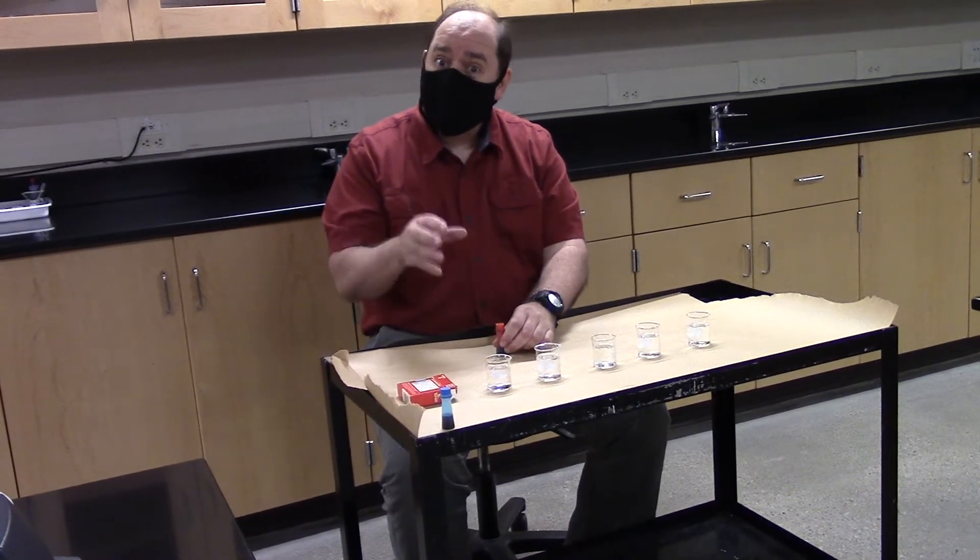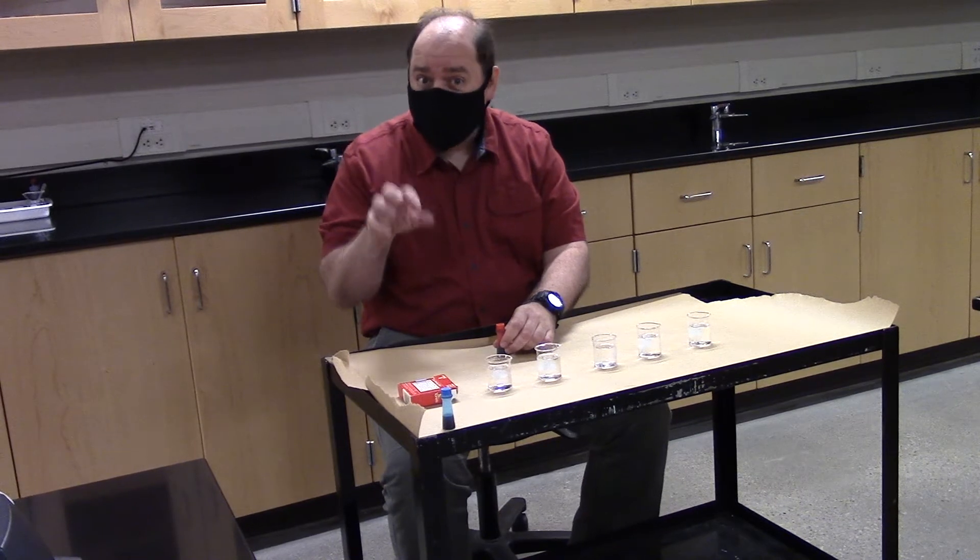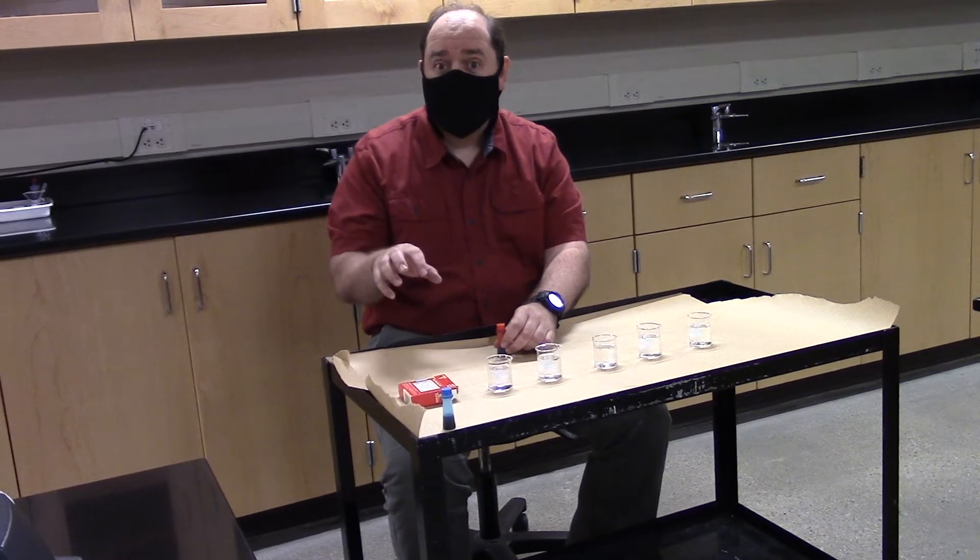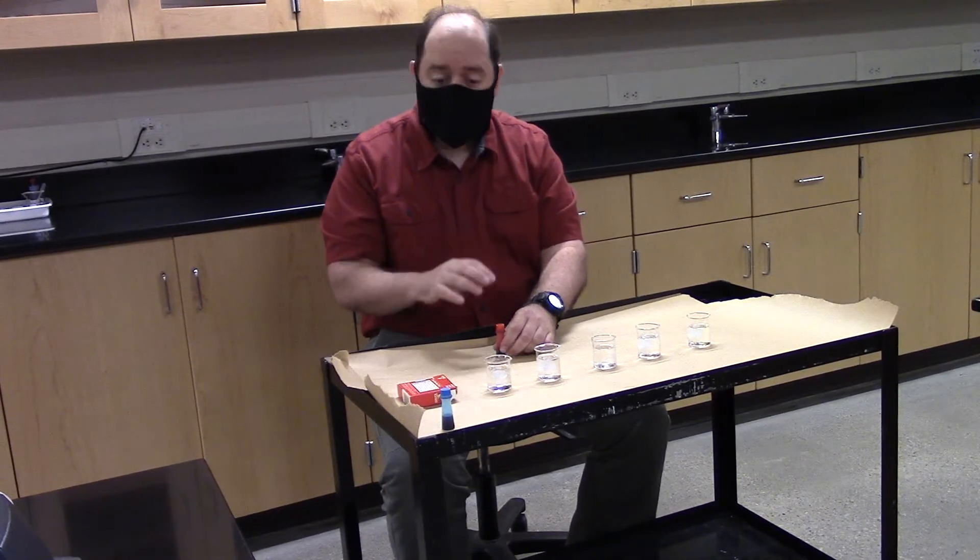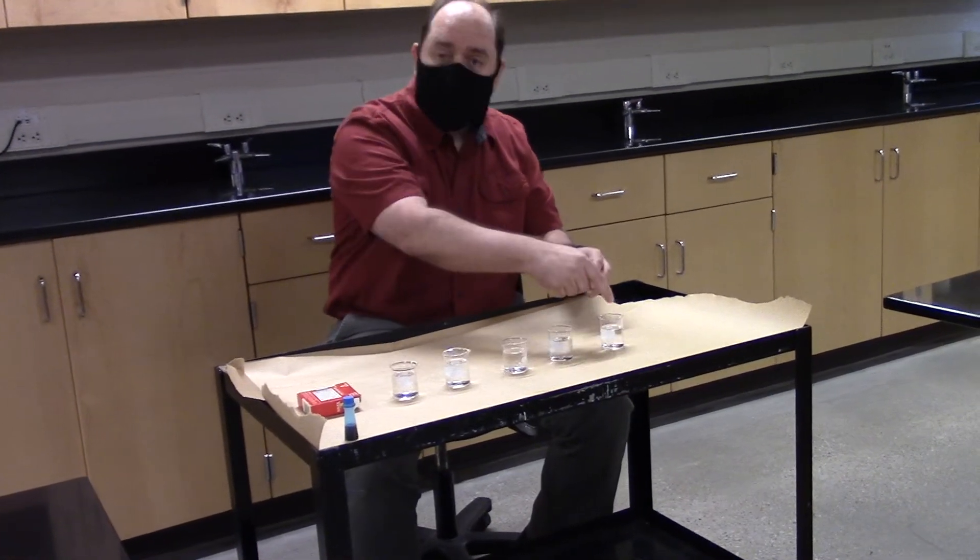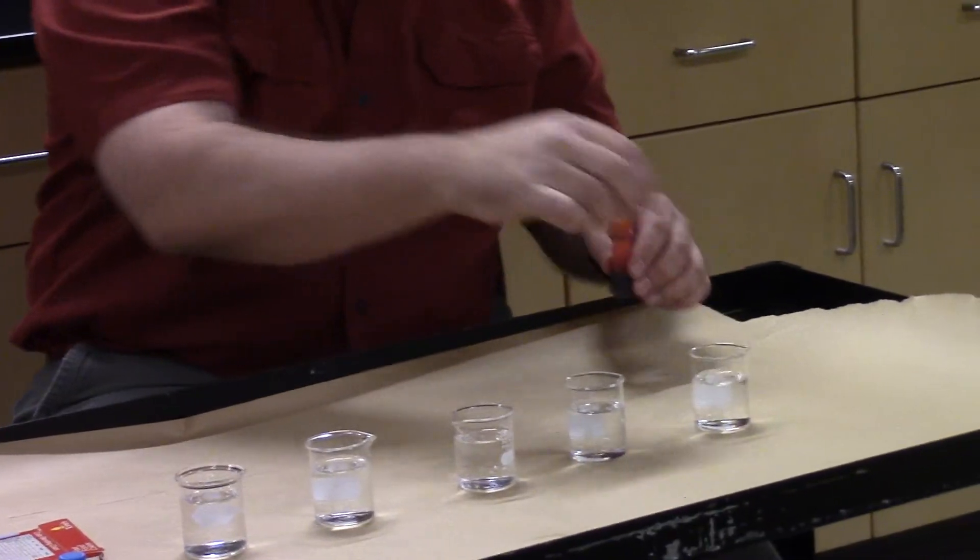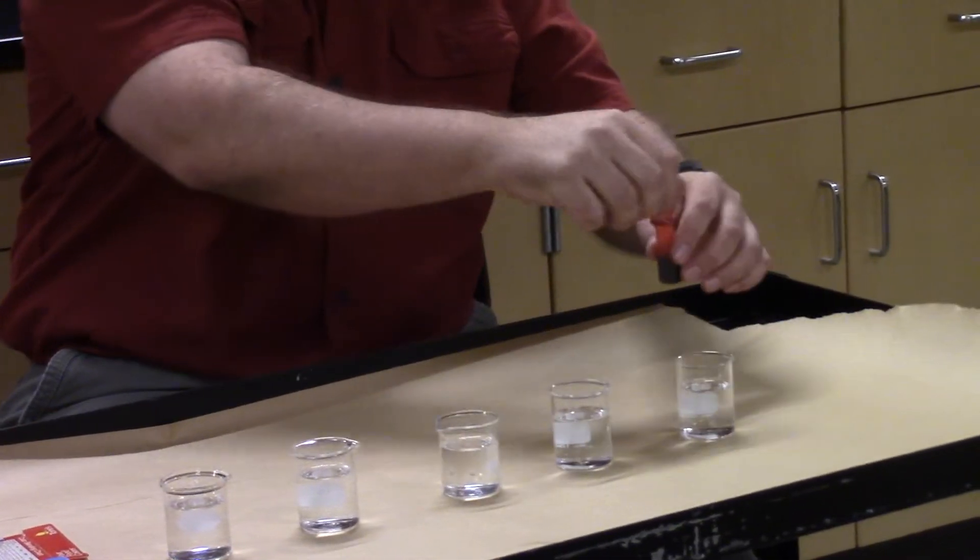There are cells that make the secreted morphogens and there are others that receive it. So let's start at this end with a red morphogen being made by these group of cells that are way over here on this side.